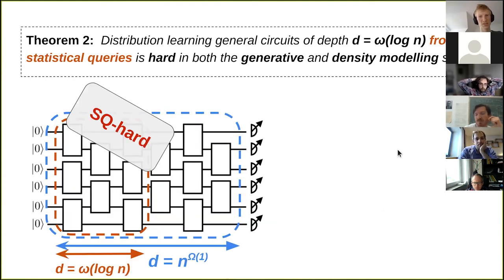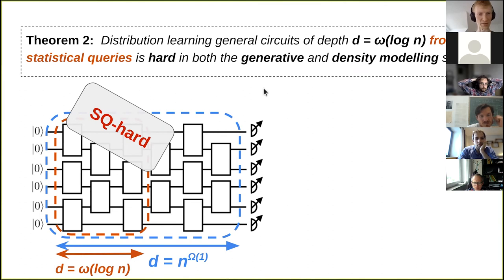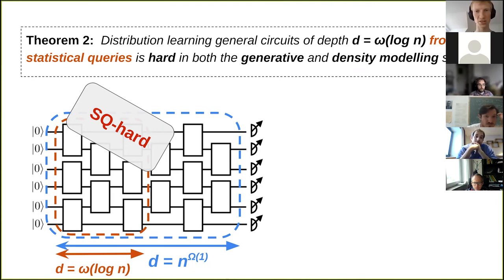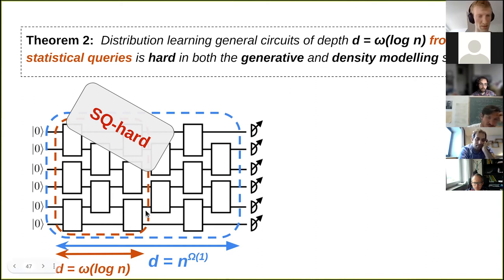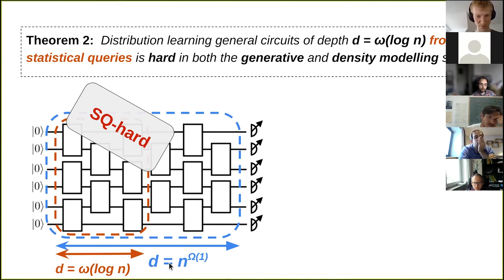In this restricted SQ model we can show a better result: we can get the depth dependence down quite a bit. Distribution learning of general circuits of depth small-omega of log(n) from statistical queries is hard in both the generative and density modeling sense. So even these shorter-depth circuits are hard in this framework. We currently view this as evidence for hardness at potentially even smaller depths in the general setting, but so far we don't know how to improve those bounds.